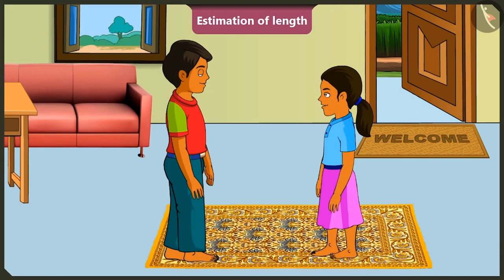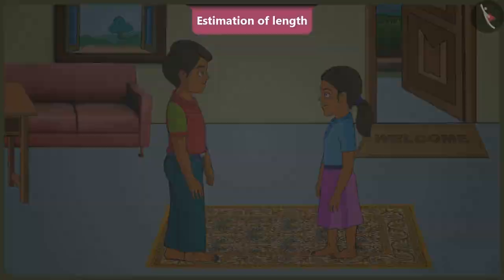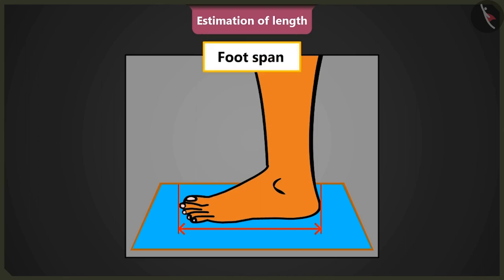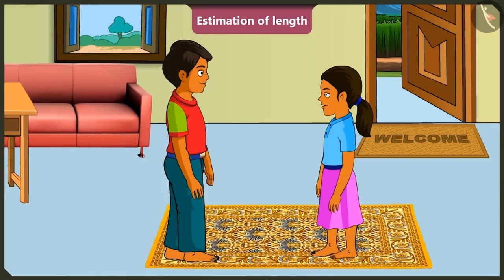How long is a foot span, brother? Please tell me. The length from the big toe of the foot to the heel of the foot is a measure of foot span. Okay, I got it.